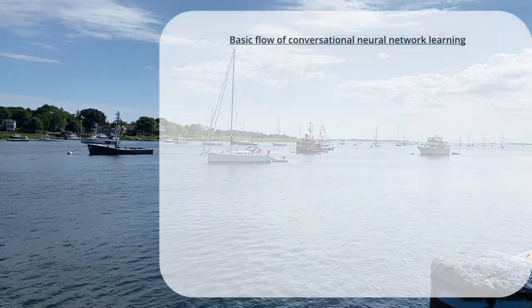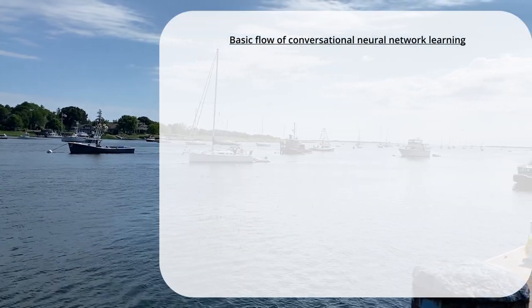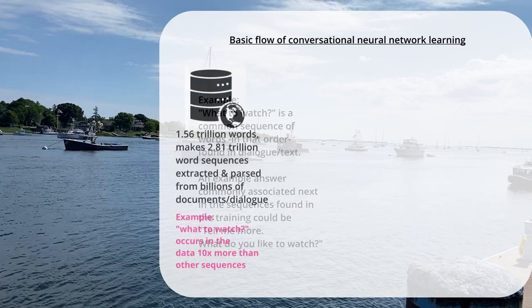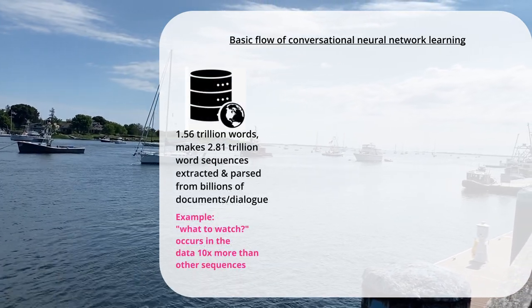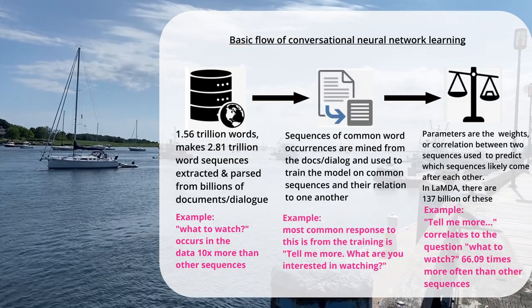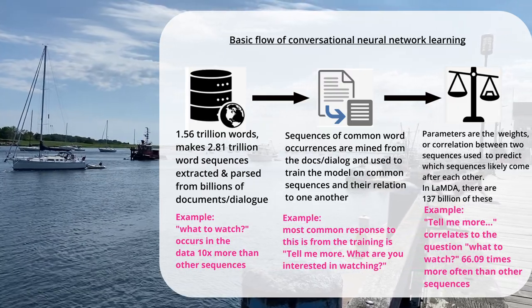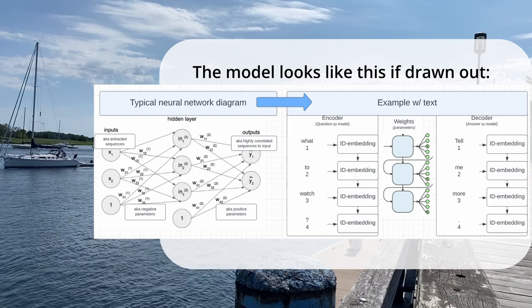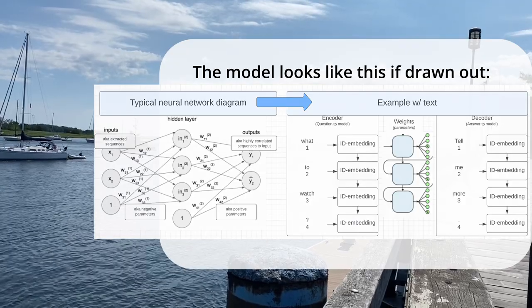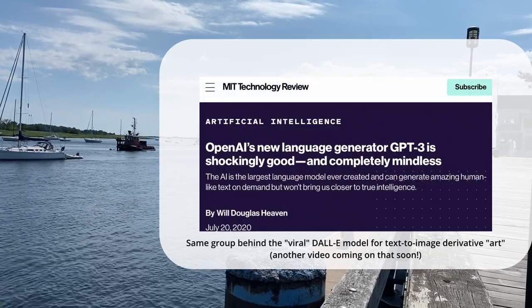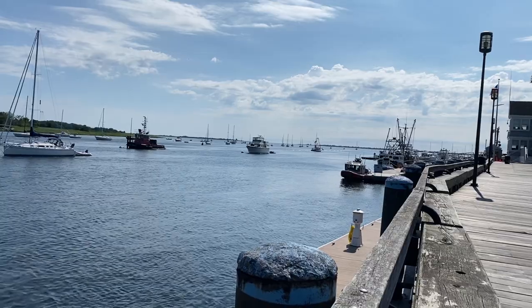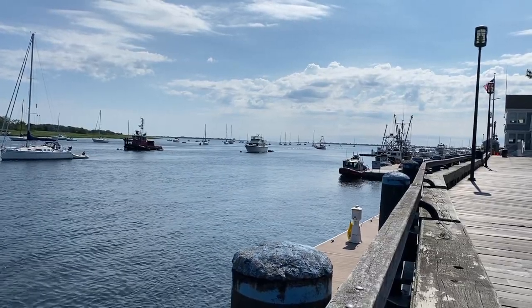For those not as familiar with neural networks and machine learning: a parameter in this sense is sort of like a common word co-occurrence vector. These vectors come from training sets from the open web and are extracted into parameters used to predict what word likely comes next in a sentence. This sort of model is not novel — there are a lot of others out there, most notably OpenAI's GPT-3, which was also released in 2020.